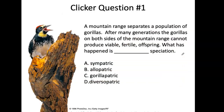I've left some clicker questions in for you. Pause your video, think about this, read it, and then we'll go over the answer. A mountain range separates a population of gorillas. After many generations, the gorillas on both sides of the mountain range cannot produce viable fertile offspring. The answer is allopatric speciation — not gorillopatric speciation.